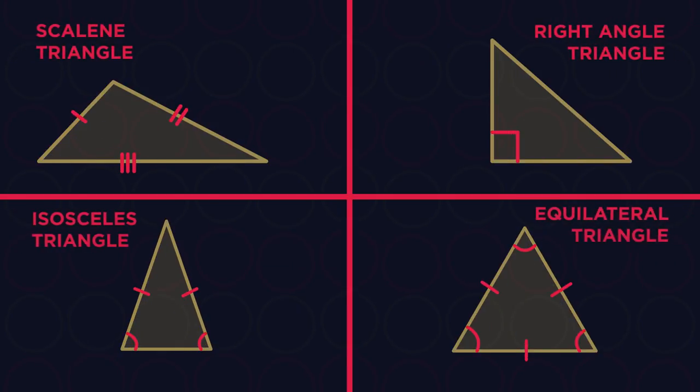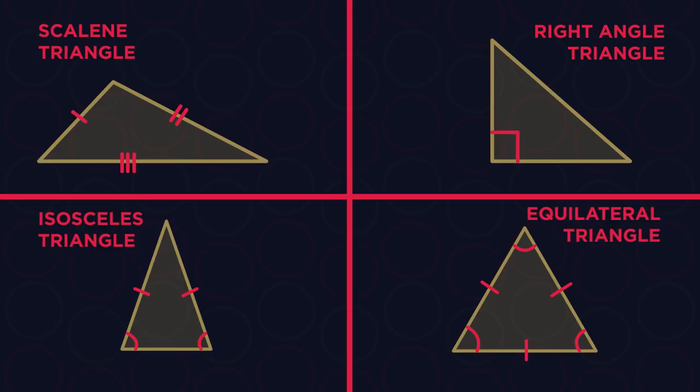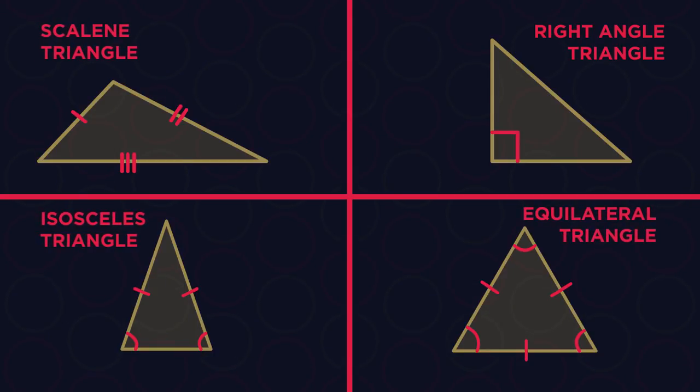So there we have our different types of triangles. Just find a way that works for you to remember the different names. As I said earlier, I always remembered isosceles means equal legs.